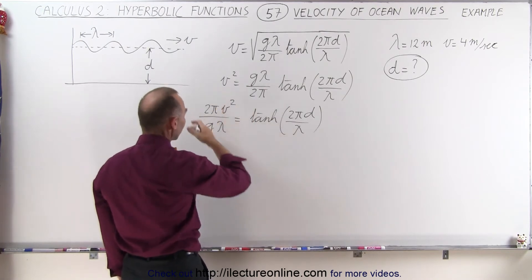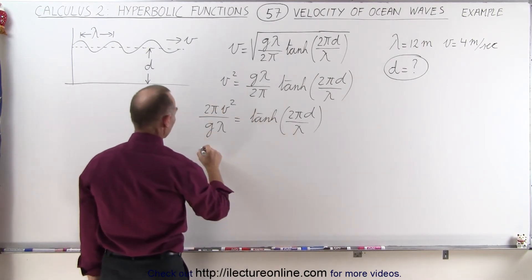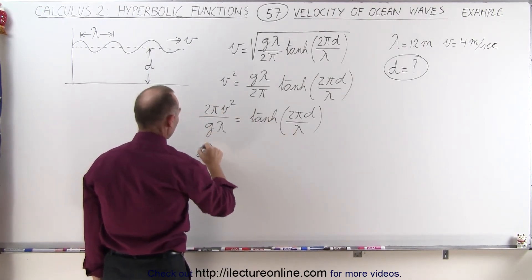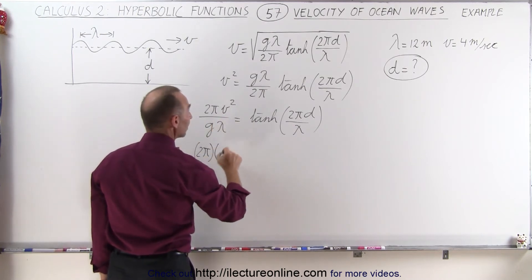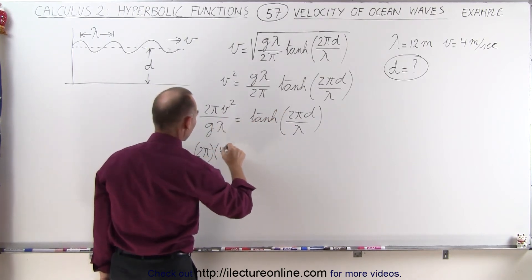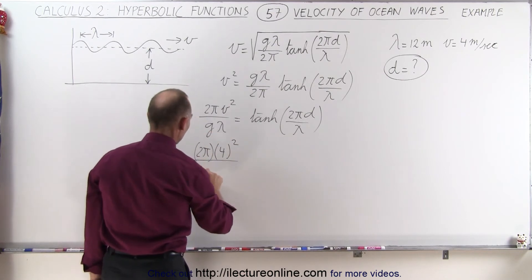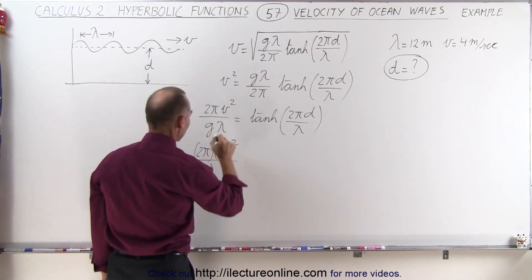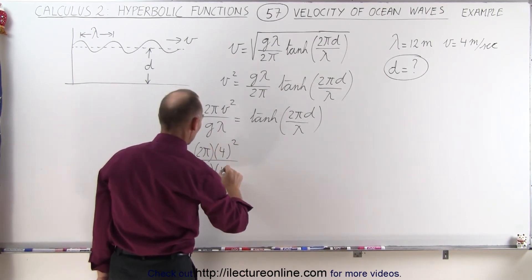Now, before we do that, let's plug in some values and see what this is equal to. So we have 2π times v squared. Now v is equal to 4, so that would be 4 squared, divided by g is 9.8, and lambda we were given it to be 12.